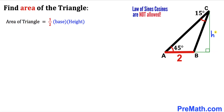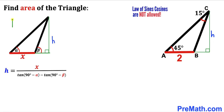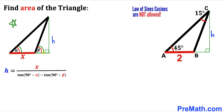Our task is to calculate the height of this triangle. For this obtuse triangle, the base is represented by lowercase x and the height is lowercase h, where this angle is called alpha and this exterior angle is called beta. The formula for height is: h equals x divided by (tangent of (90 degrees minus alpha) minus tangent of (90 degrees minus beta)).